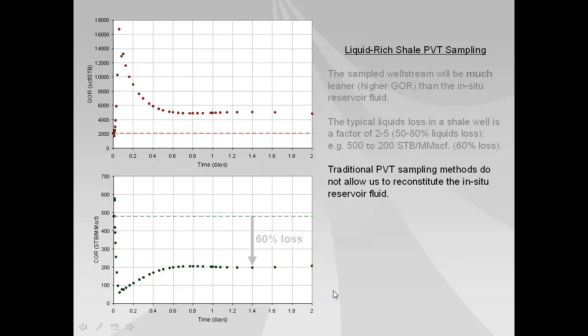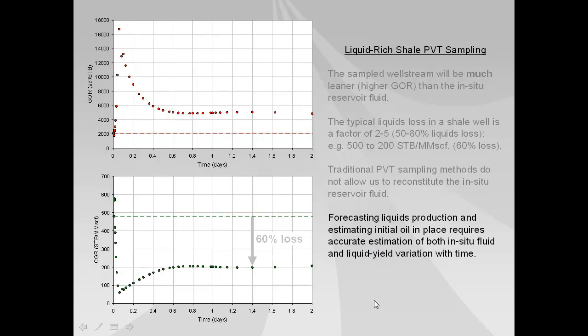So one of the problems is that traditional PVT sampling will not allow us to reconstitute the initial fluid because we don't know what the initial gas oil ratio or CGR is. And without having the initial fluids in place we're not able to model the forecast of liquids into the future.